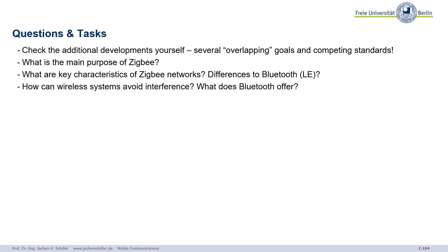Looking at the different developments, you find overlapping goals and competing standards — this is also why not all standards result in successful products. Industry will not produce products that kill their own other products. Review questions: What was the main purpose of ZigBee? What are the key characteristics of ZigBee networks and the differences from Bluetooth and Bluetooth Low Energy? How can interference be minimized — what solutions does Bluetooth offer?